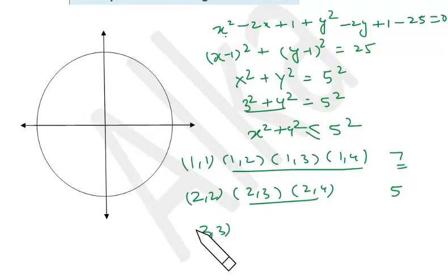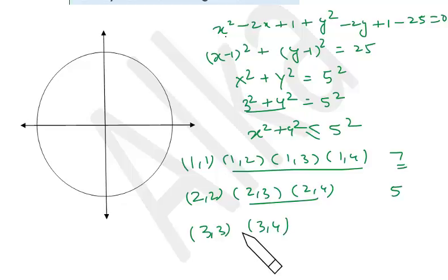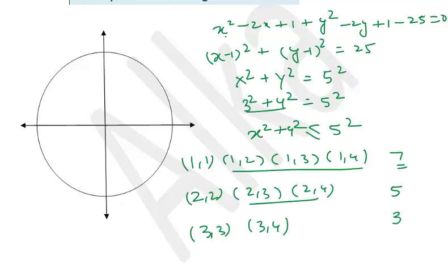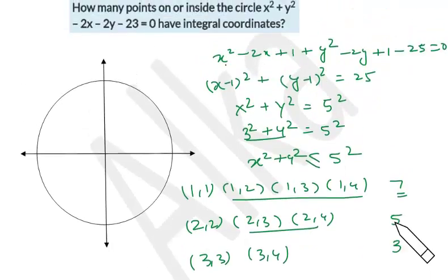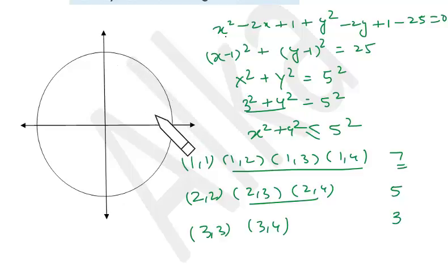Starting with x = 3: points (3,3) and (3,4), with (4,3) also included when the x-coordinate is larger. So we get (2,3), (3,3), giving a total of 15 points in the first quadrant region. Multiplying by 4 for all four quadrants gives 60 points.